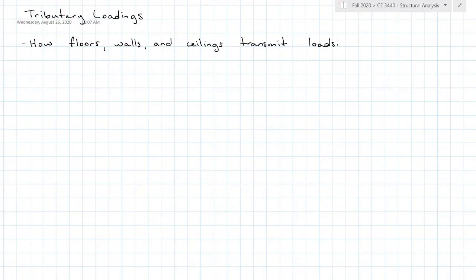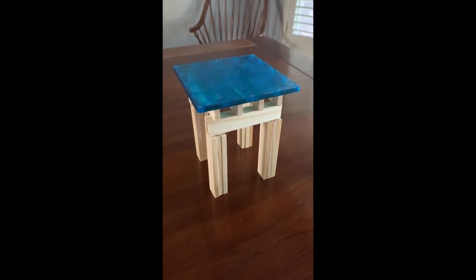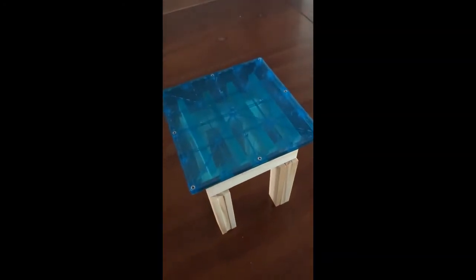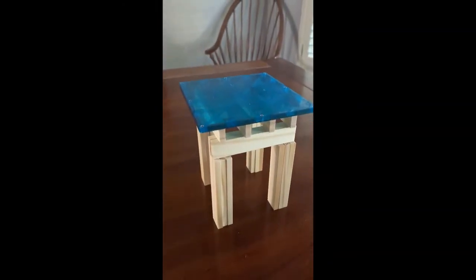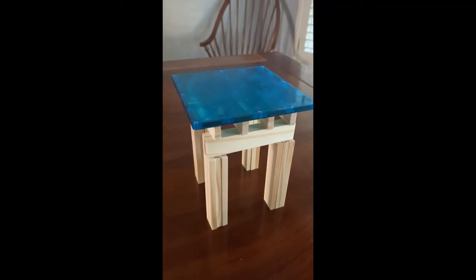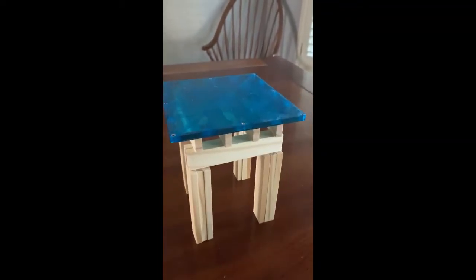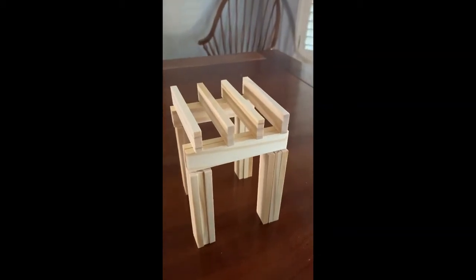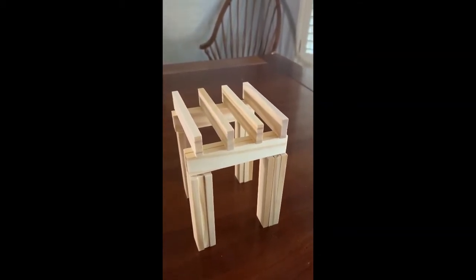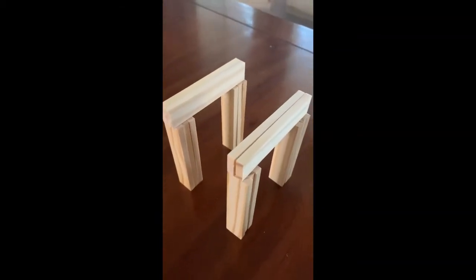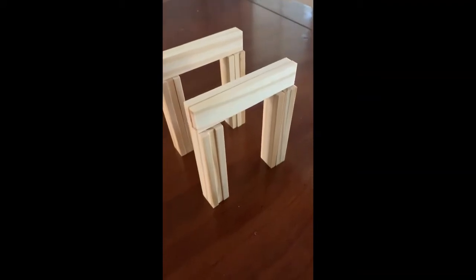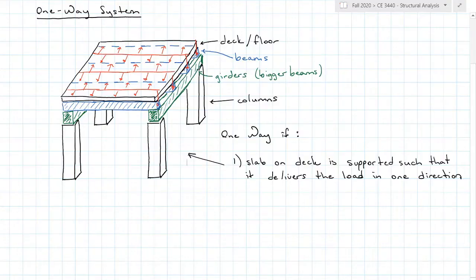We're going to talk about two different systems: a one-way system and a two-way system. Here is my building — you can see the turquoise floor decking, and then the beam and girder system. This is a one-way system. The flooring distributes onto the beams, which distribute onto the girders, which pass along to the columns. So this deck, beam, girder, and column layering is a one-way system.